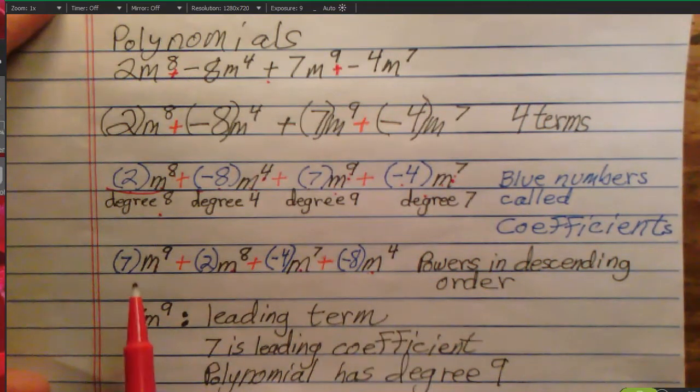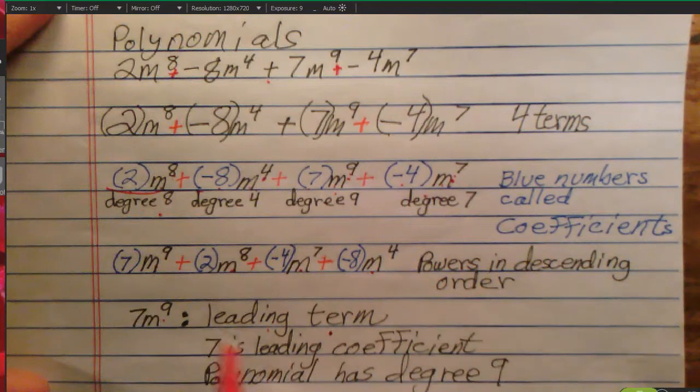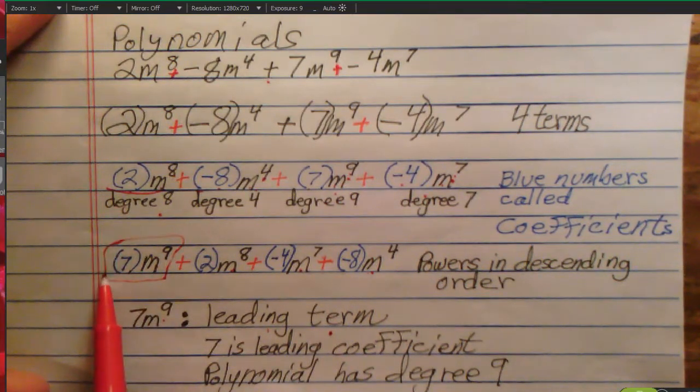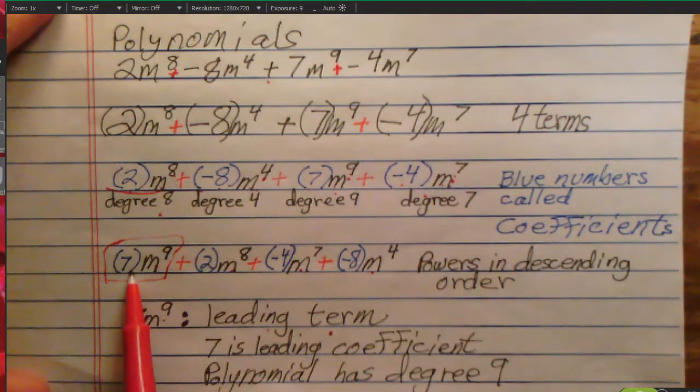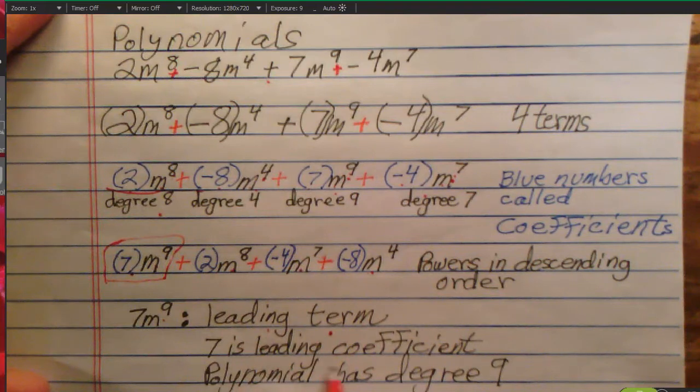The highest degree term is called the leading term. So, 7m to the ninth power is the leading term. The coefficient of the leading term is called the leading coefficient. So, 7 is the leading coefficient.